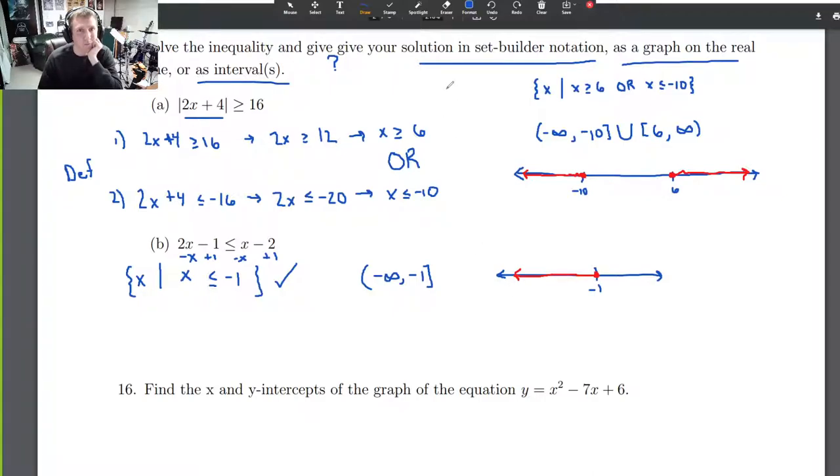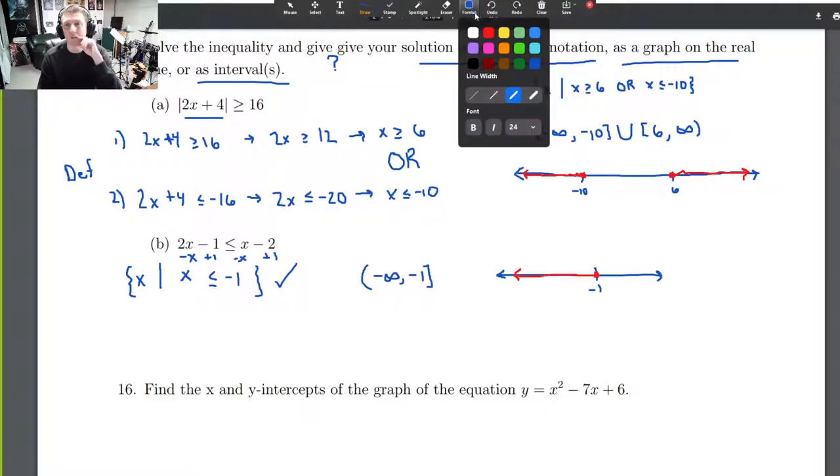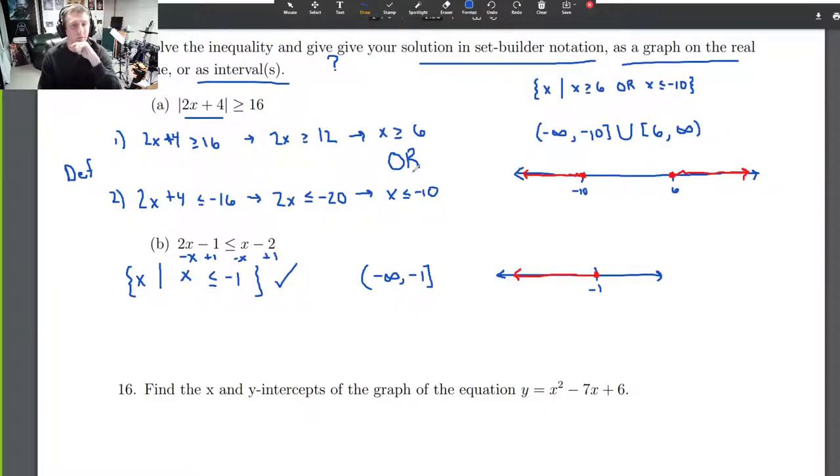Number 16. I'm going to go ahead and do this one as well. It's smashed at the bottom of the screen, but it won't take much space. Find the x and y intercepts of the graph of the equation y = x² - 7x + 6. I notice first off that this thing factors, so I'm going to factor that: (x - 6)(x - 1). It will be clear why I'm doing that in just a second.